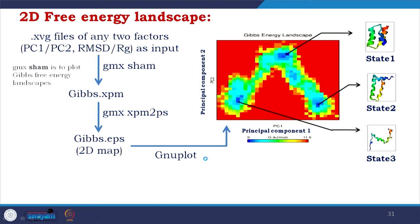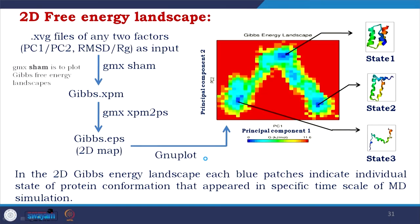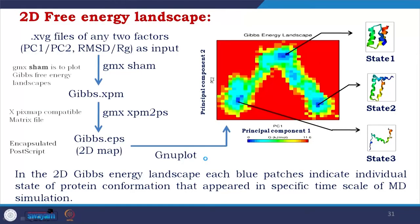Where you see the blue color, you know the stabilized state of a protein is there, and you isolate the PDB file from there — they represent the states. In the 2D Gibbs free energy landscape, each blue patch indicates an individual state of protein conformation that appeared at a specific time scale of MD simulation. By identifying them you can correlate the movement of the protein with the functional implication that state might have. Note: the .xpm is an XPixMap-compatible matrix file and .eps is an encapsulated postscript file.